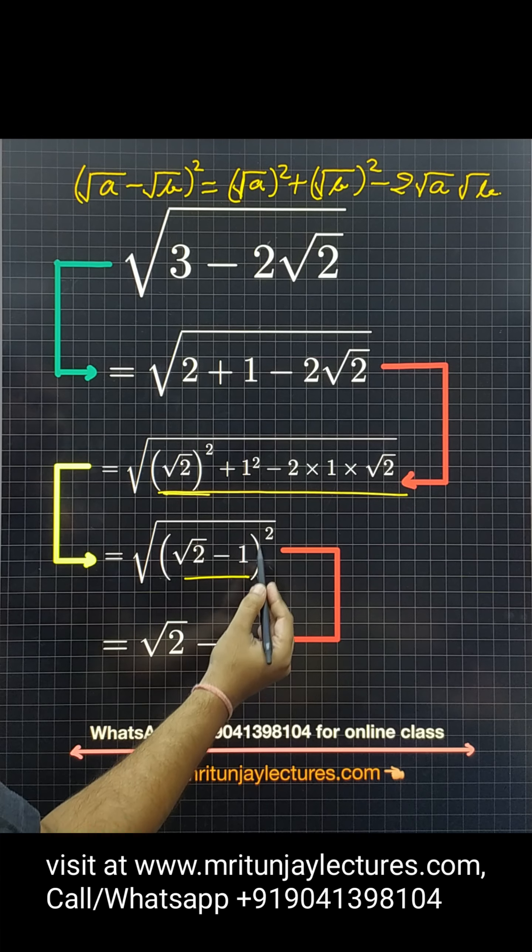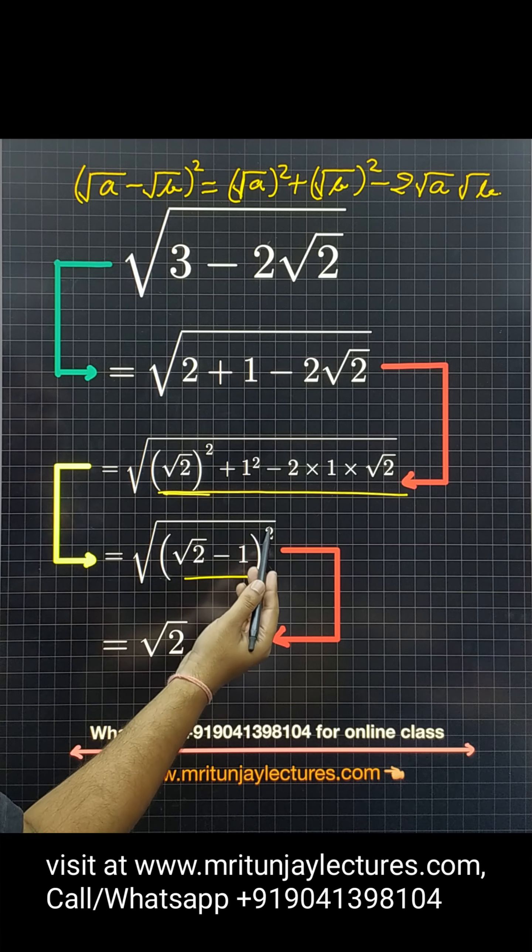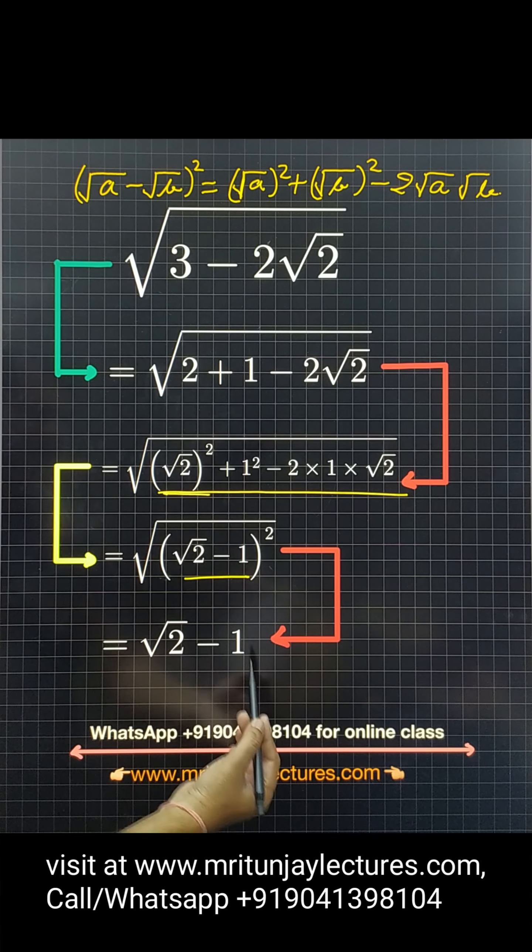That one written simply √((√2 - 1)²). So, roots are cancelled. So, we got √2 - 1 is the right answer.